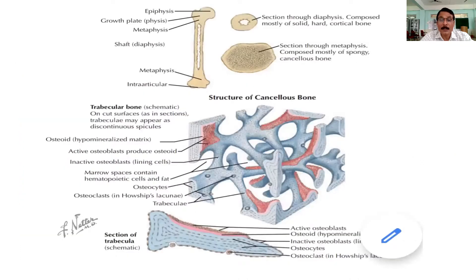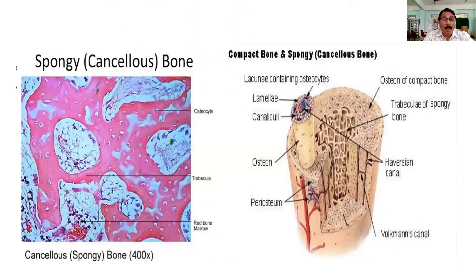This is a microscopic picture of cancellous bone showing the cancellous bone network. Cancellous bone is also organized, but the bone is not compact like cortical bone. The internal organization is similar — lacunae containing vessels, lamellar pattern, canaliculi, and osteons are present — but unlike cortical bone, these structures are very sparsely distributed within the open lattice network.